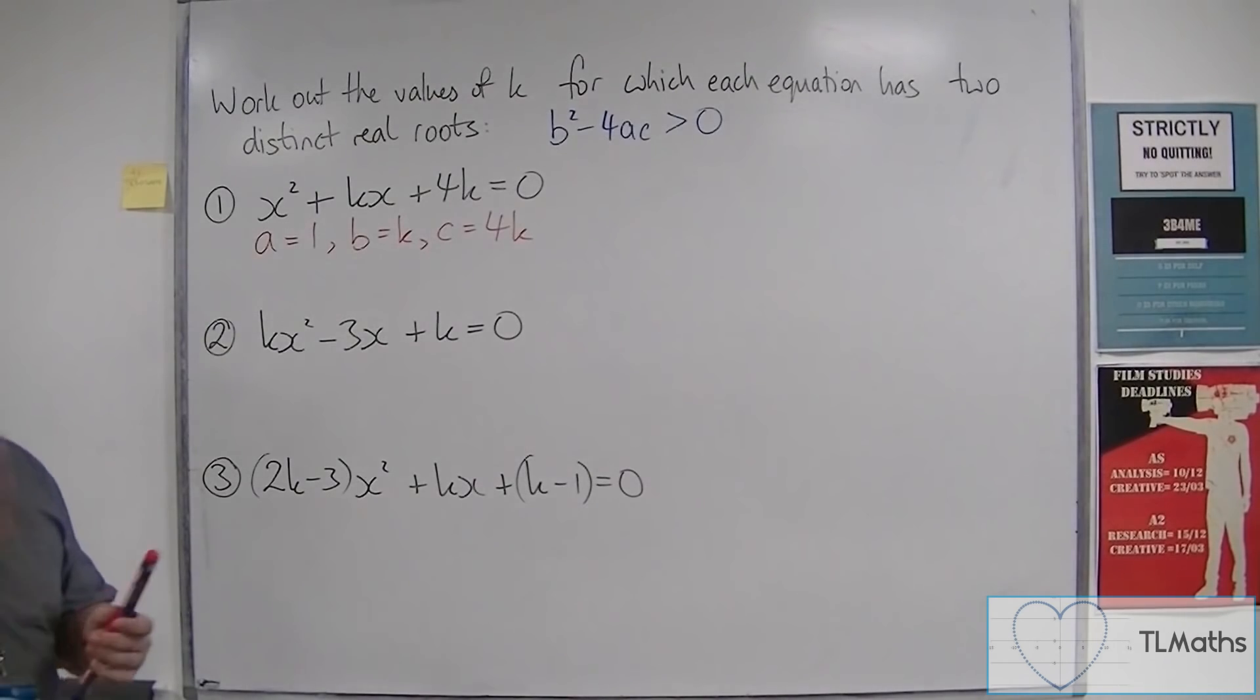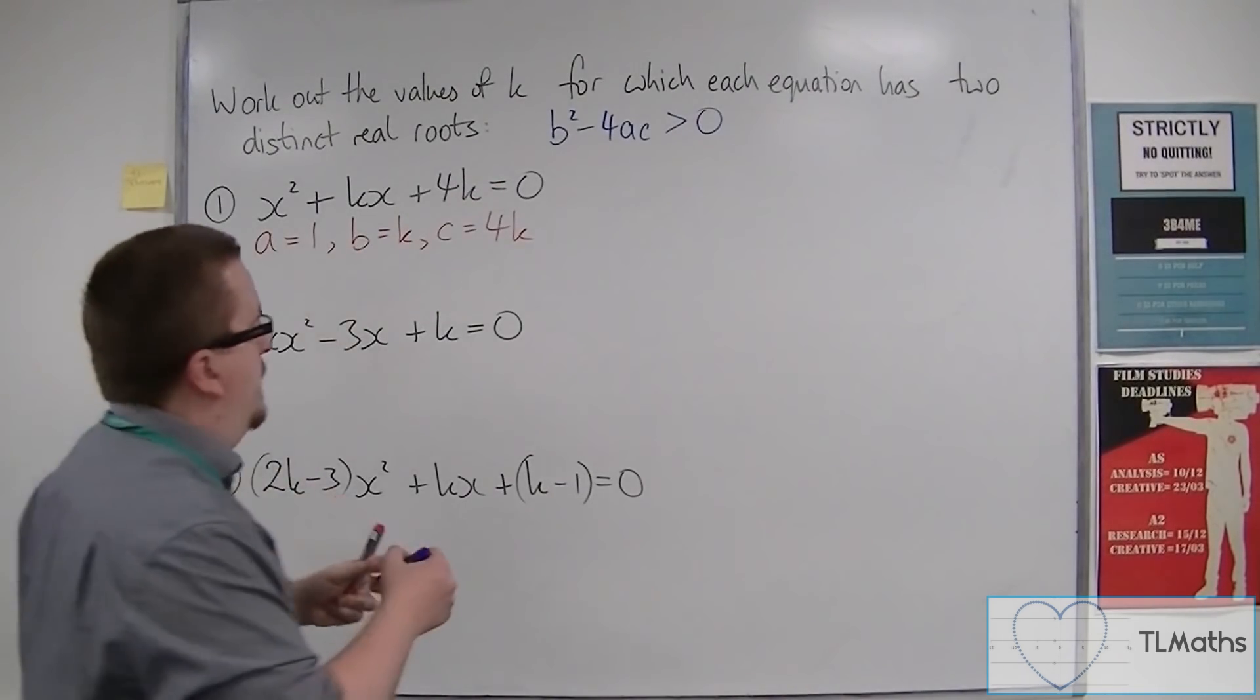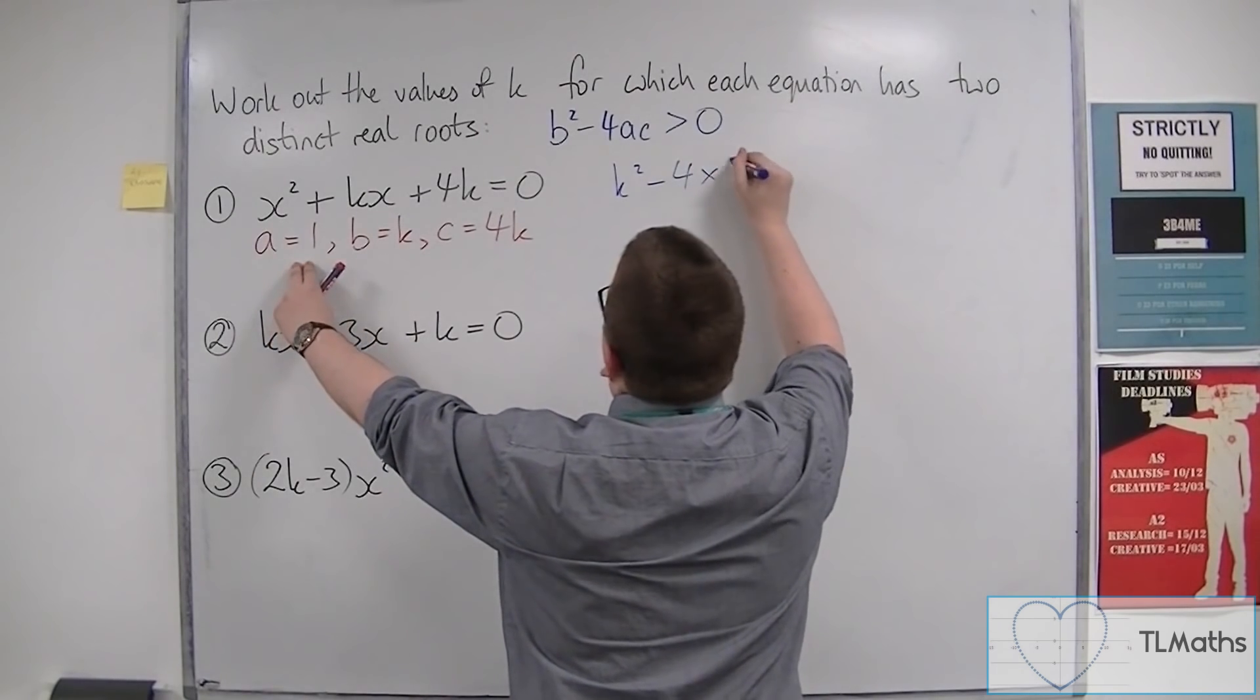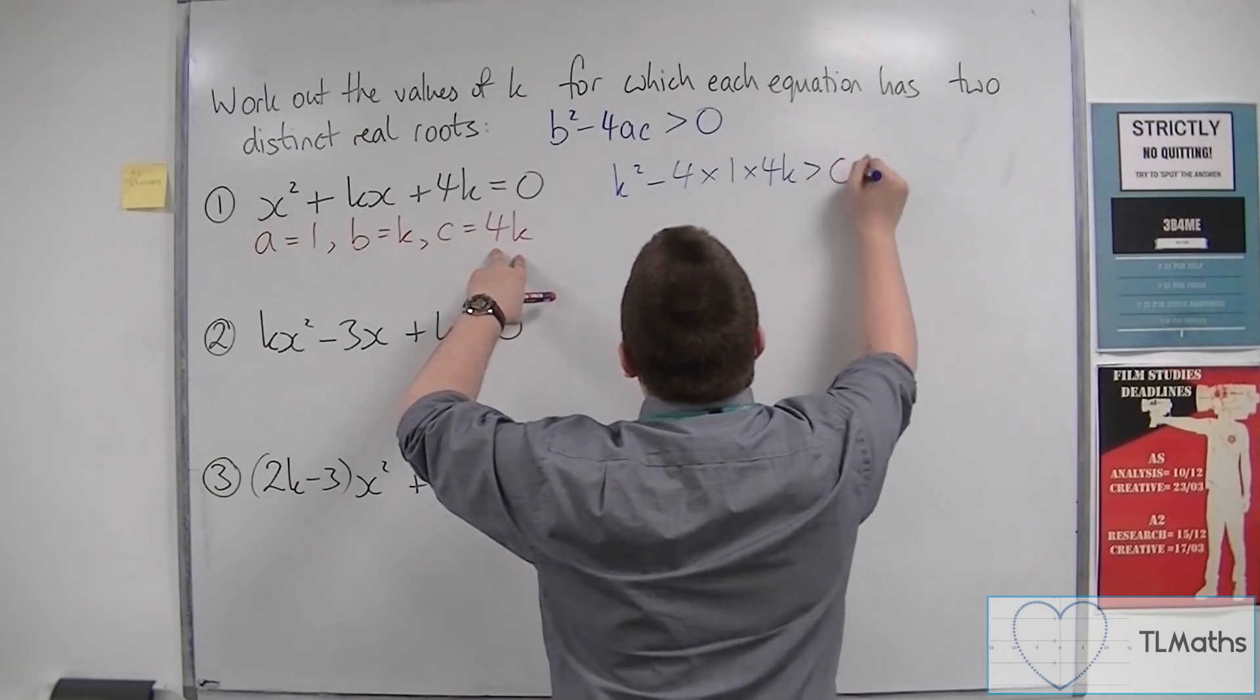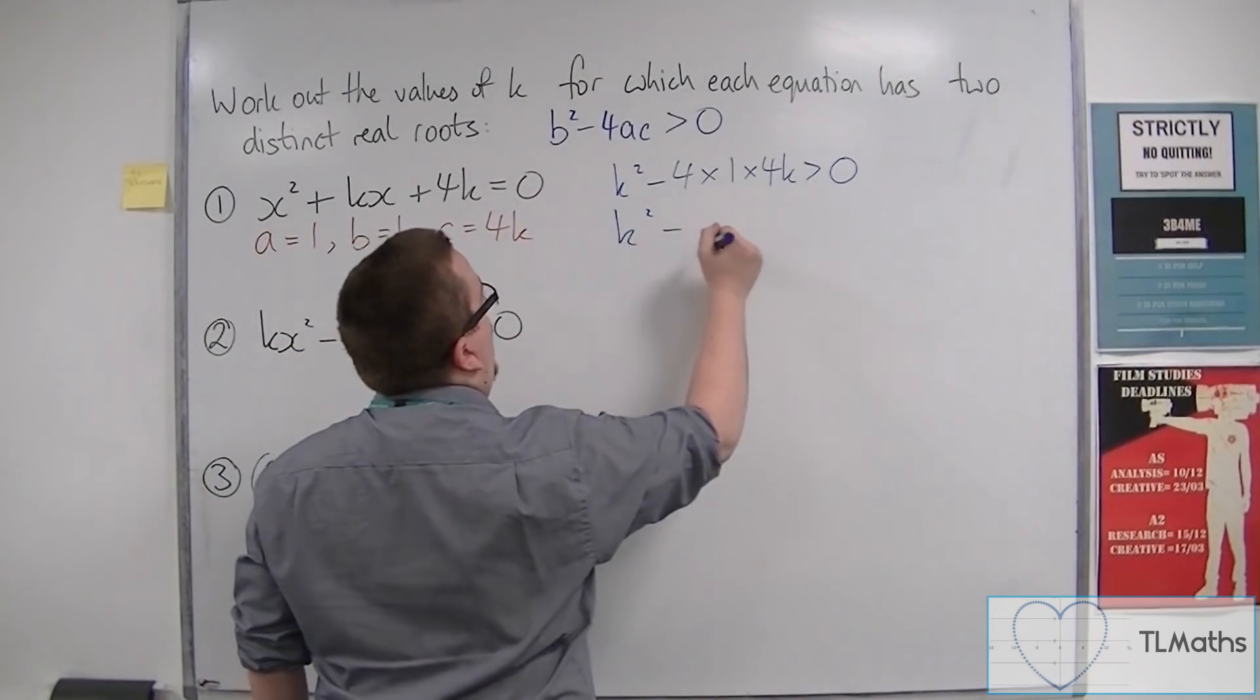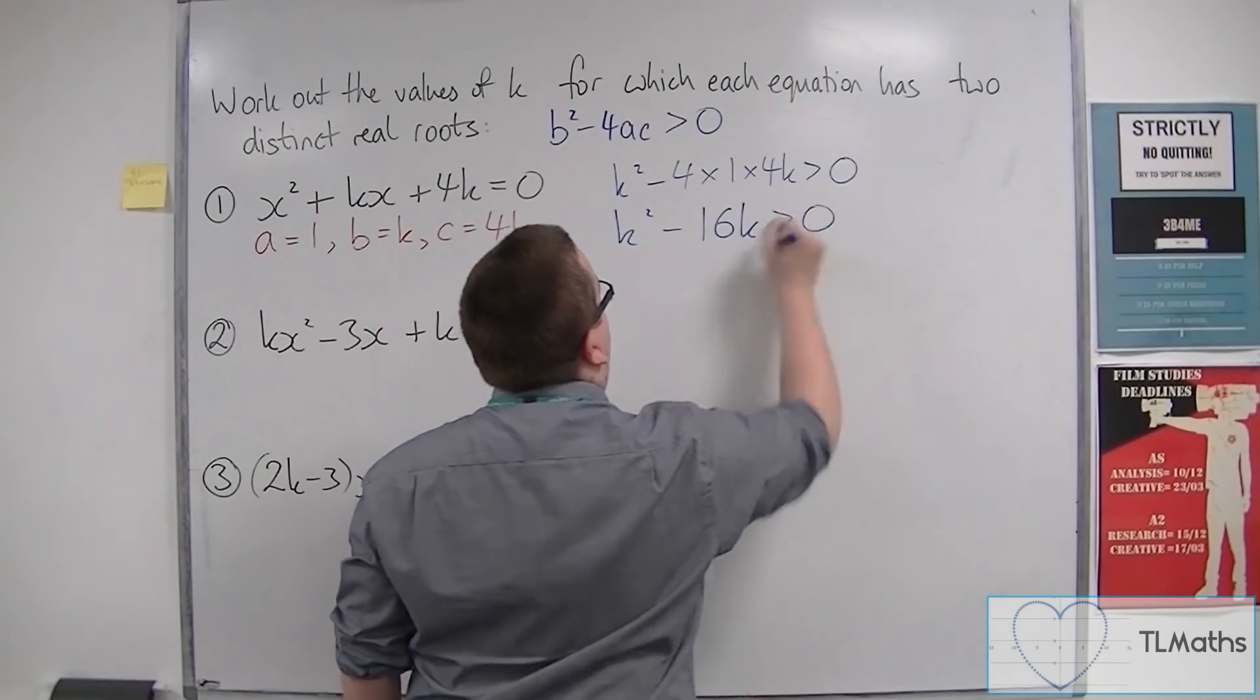Okay, and then we're going to substitute those into this discriminant here. So we've got b squared, so k squared minus 4 times 1 times 4k. And that's going to be greater than zero. So k squared minus, now that's going to be 16k is greater than zero.